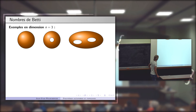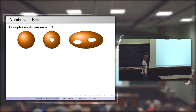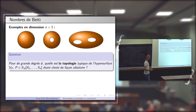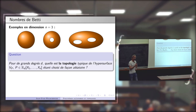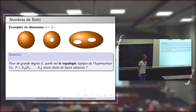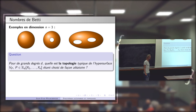Cela soulève, une fois encore, cette dépendance : une question probabiliste. Pour les grands degrés du polynôme, quelle est la topologie typique de l'hypersurface formée par les racines du polynôme ? Si vous piochez un polynôme au hasard, quelle forme va avoir son lieu d'annulation ?